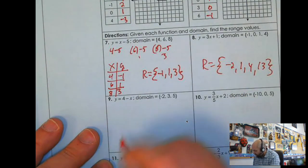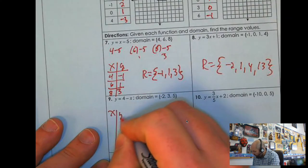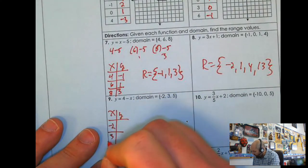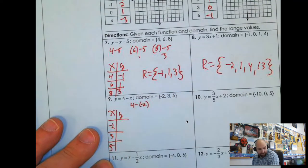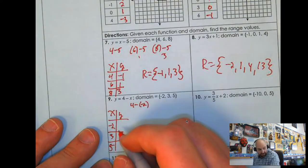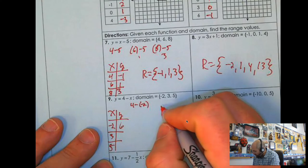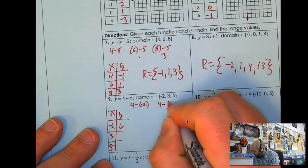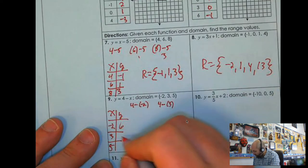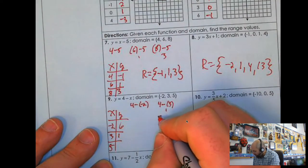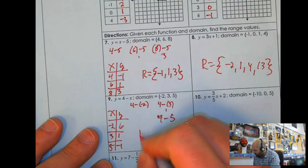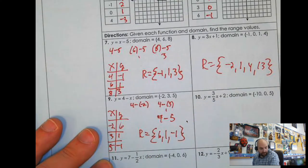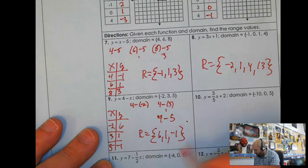I'll go ahead and do number 9. Number 9, I'm going to make my x and my y over here. I'm going to do negative 2, 3, and 5. So I do 4 minus a minus 2, that's 4 plus 2, so that gives me 6. And then I'm going to do 4 minus 3, 4 take away 3 is 1. And I'm going to do 4 take away 5, 4 take away 5 is negative 1. So my range here is 6, 1, and negative 1. You could rewrite it as negative 1, 1, and 6, but it doesn't make a difference.